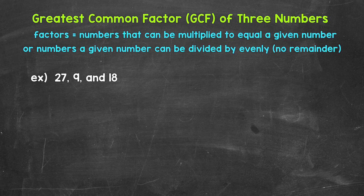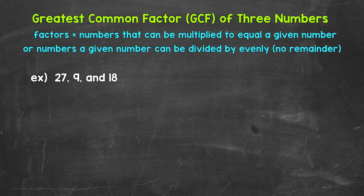This is going to be the same exact thing we do for two numbers — we just have an extra number, so we have three numbers. Factors are the numbers that can be multiplied to equal a given number, or numbers a given number can be divided by evenly, with no remainder. You can think of factors as the numbers that go into the given number. The greatest common factor is the greatest factor in value that all the numbers share — that they all have in common.